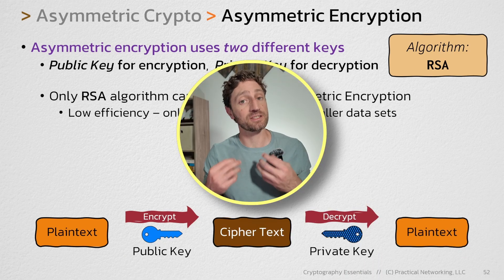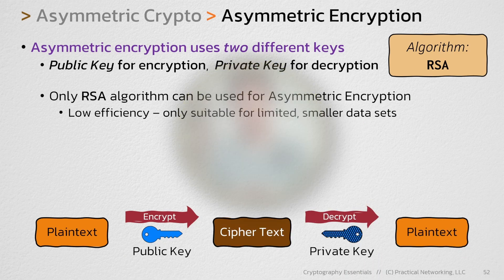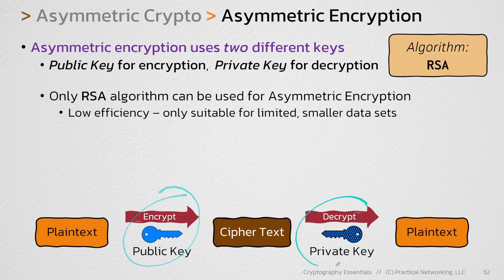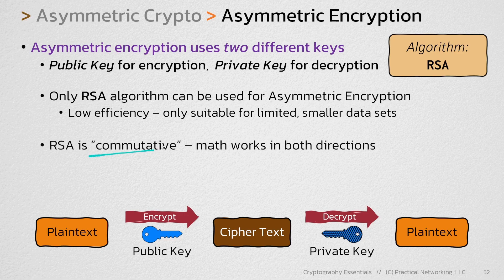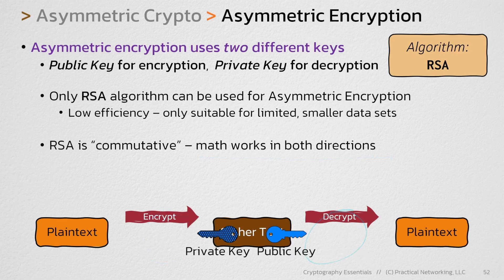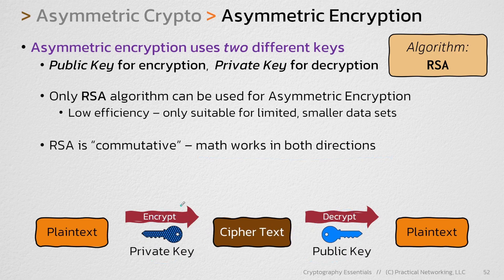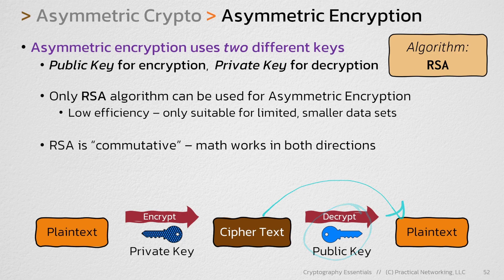There is one last idea I need to leave you with regarding RSA. RSA involves encrypting with the public key and decrypting with the private key. But the math itself is what's called commutative, which means it works in both directions. So not only can you encrypt with the public key and decrypt with the private key, you can also do this in reverse — use the private key for the encryption operation and then use the matching public key to turn it back into the original plaintext.